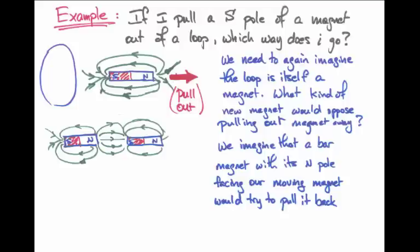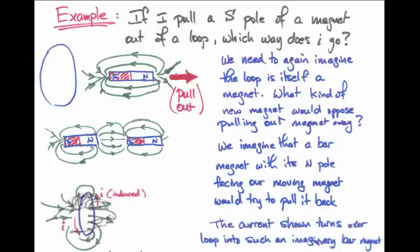In this way, there would be an attractive force, and it would oppose the motion that we are trying to introduce, namely pulling the actual bar magnet away. Then we have to imagine what kind of loop of wire and current in that loop would actually produce a north pole that faces to the right in this picture.